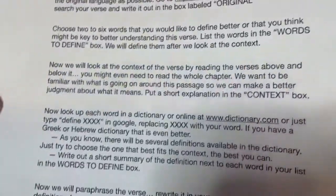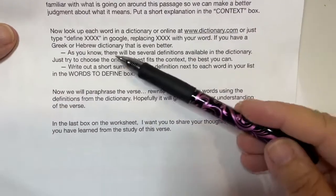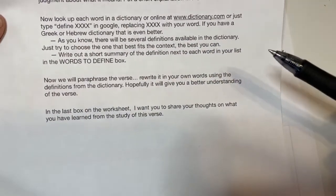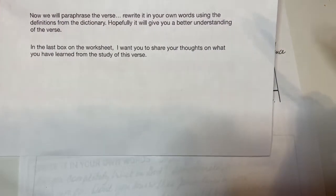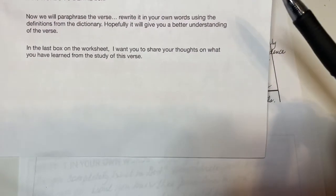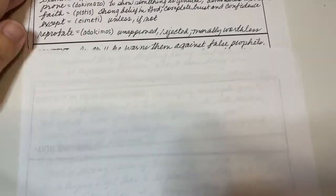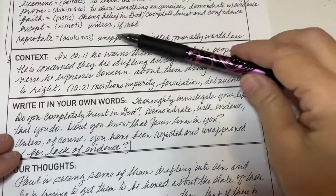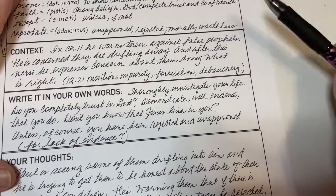Now we're going to paraphrase the verse — rewrite it in our own words using the definitions we just got from the dictionary. Hopefully this will give us a little better understanding. So looking at the context and the word definitions, I rewrote the verse in my own words. Here is what I came up with — this is what I think Paul was saying to the Corinthians: 'Thoroughly investigate your life. Do you completely trust God? Demonstrate with evidence that you do. Don't you know that Jesus lives in you?'